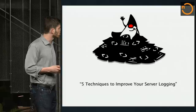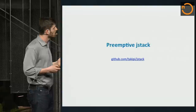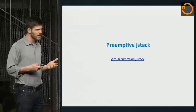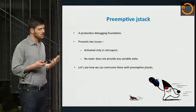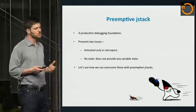We actually have a great blog post about it — about five techniques to improve your server logging, with another four which I haven't talked about here. All the demos are available on GitHub. Most of us have been using JStacks for a long time, and thread dumps in general, to understand when something bad happens — when something crashes, hangs, or when looking at the JVM — we'll use something like JStack to give us that thread dump, really a production debugging foundation.